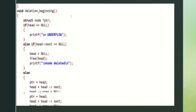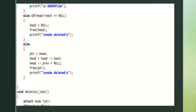Next is void deletion beginning — delete the beginning element. Struct node ptr. If head is equal to null, it is underflow and we can't delete. It jumps to else if — if head next is equal to null, head is set to null and free of head, which means the list contains only one node. Printf: node deleted successfully. Otherwise it jumps to else — ptr is equal to head, head is equal to head next, head previous is equal to null. The first node's previous address value is null. Free of ptr — node is deleted successfully.